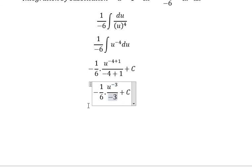Multiplying -1/6 by -1/3, we get 1/18 u⁻³ plus C.